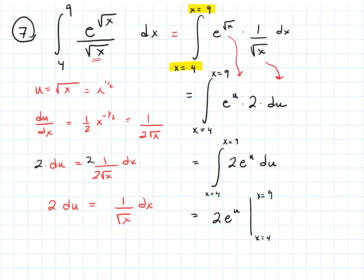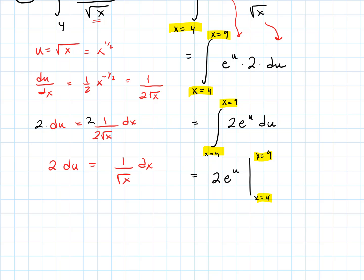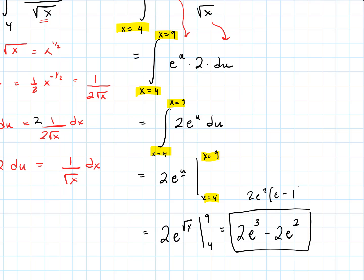We have this definite integral: 2e^u du from x=4 to x=9. Integrating: the integral of 2e^u is just 2e^u. Since it's a definite integral, we evaluate from x=4 to x=9. We plug back in √x for u, giving us 2e^(√9) − 2e^(√4), which is 2e³ − 2e². We could also factor out 2e² to get 2e²(e − 1).